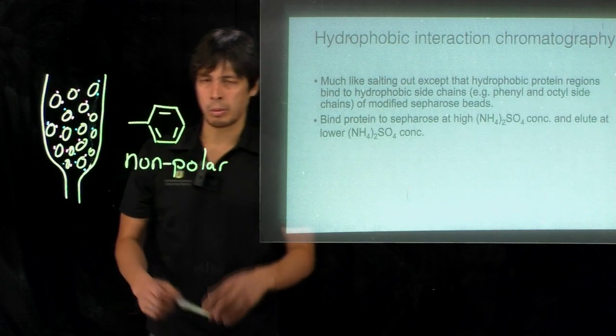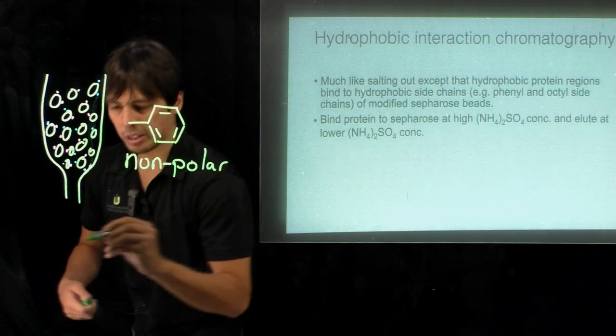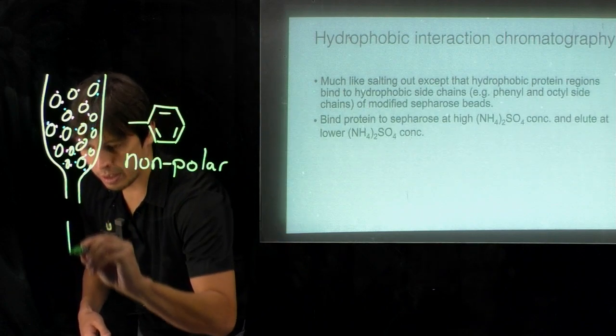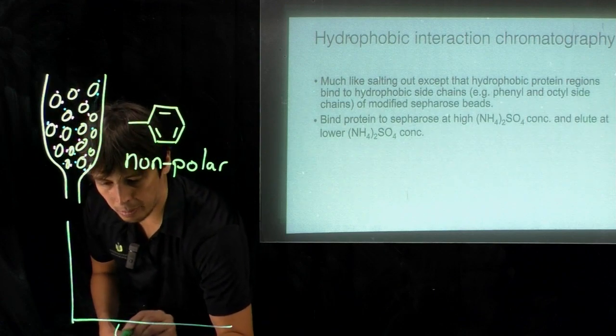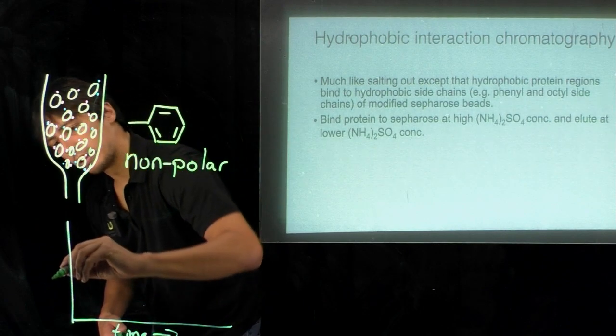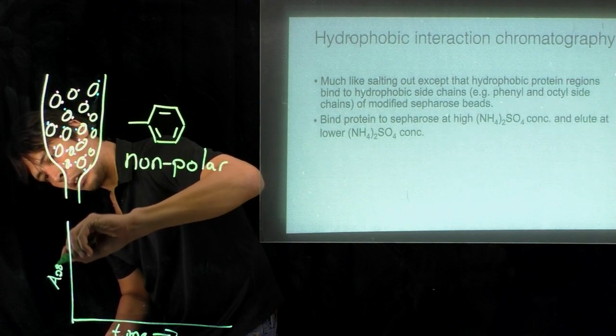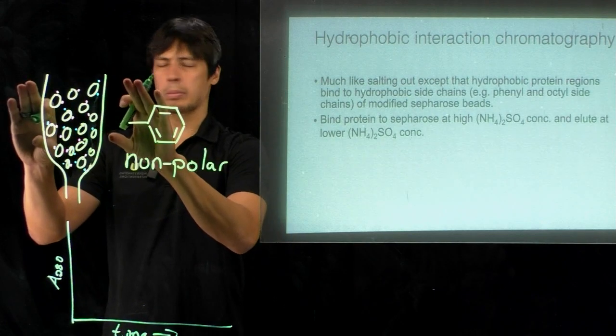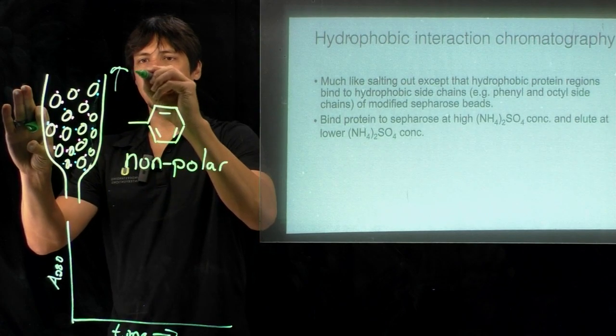Now what we do, remember this precipitation occurs at high salt. In practice, if this is our chromatogram, this is the column, this is time, and this is absorbance. We start the mobile phase for this column with high concentration of ammonium sulfate.